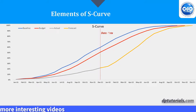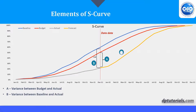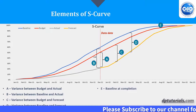On the S-curve diagram: A is the variance between budget and actual; B is the variance between baseline and actual; C is the variance between budget and forecast; D is the variance between baseline and forecast; E is baseline at completion; F is budget at completion; G is forecast at completion.